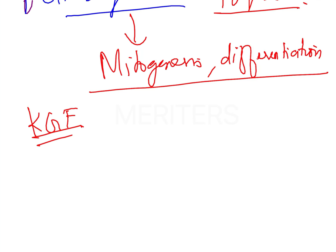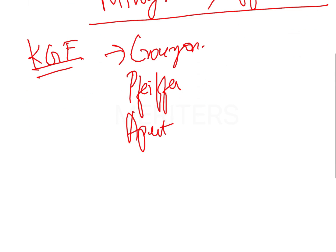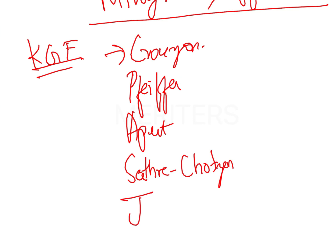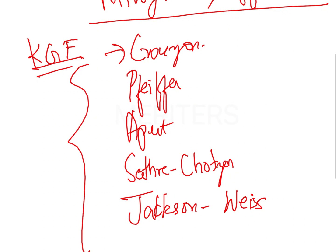Mutations in this gene are associated with Crouzon syndrome. Other syndromes caused by FGFR2 mutations include FIFR syndrome, Huppert syndrome, C3-Sautzen syndrome, and Jackson-Weiss syndrome.